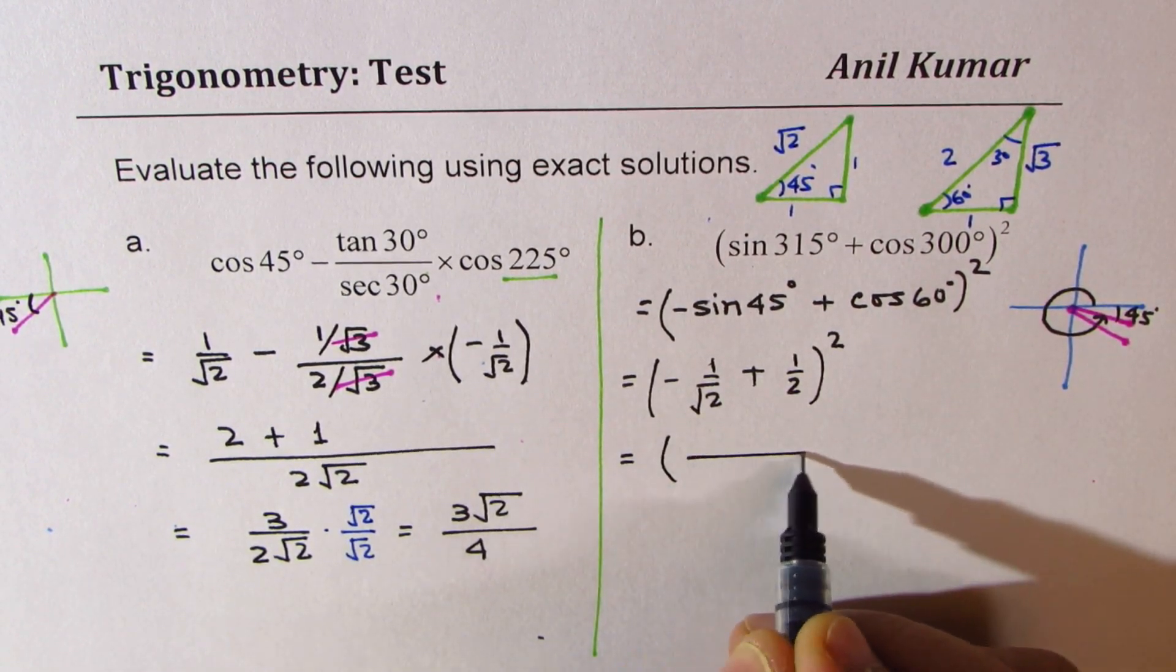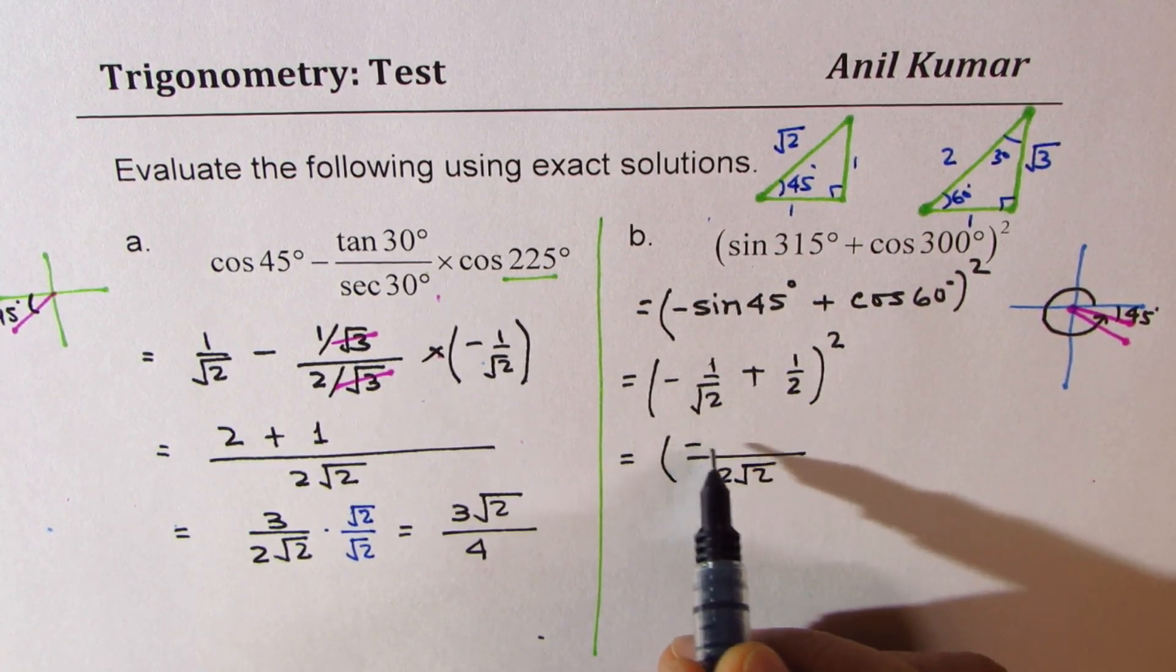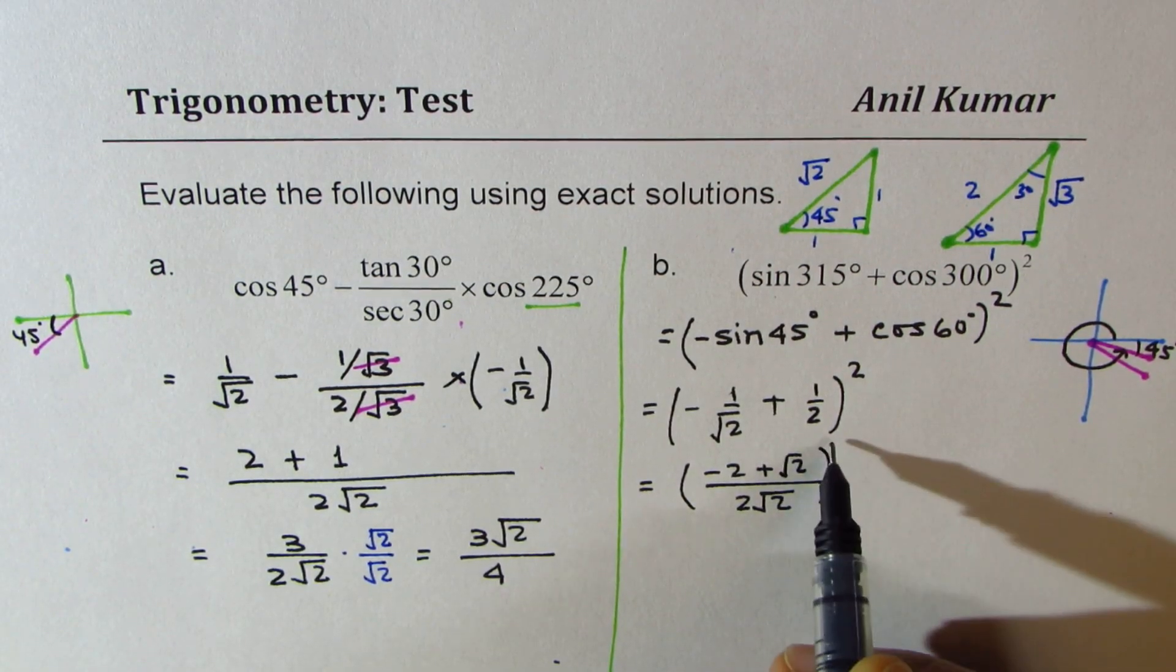We can take common denominator of 2 square root 2. So we get minus 2 plus square root 2 whole square.